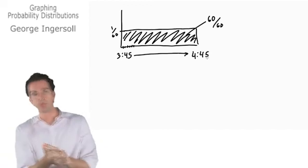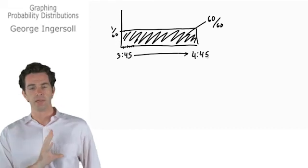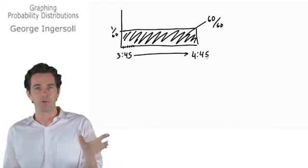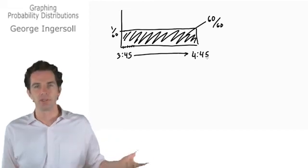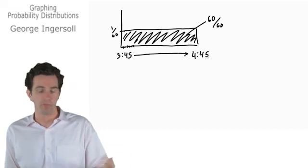Uniform distributions are pretty easy to work with because we can pretty easily determine things. Like say, what's the probability, if we get everything in place by 4 p.m., what's the probability that the whole thing gets ruined because Jim arrives sometime before 4 p.m.?